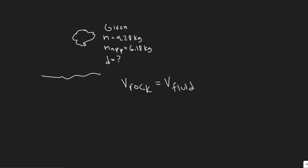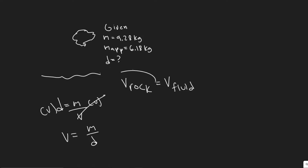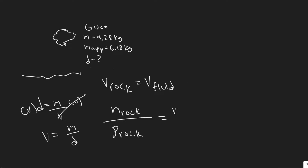We know density equals mass over volume, therefore volume equals mass over density. So we can rewrite this as the mass of the rock divided by the density of the rock — using rho for density, the Greek letter — equals the mass of the fluid divided by the density of the fluid.